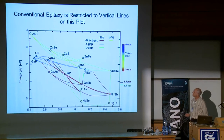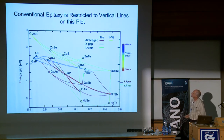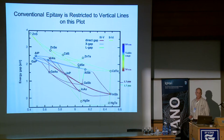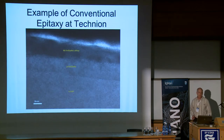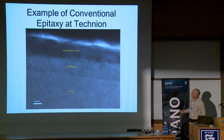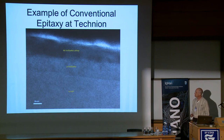Every crystal grower knows this plot. It tells us that you can only grow along vertical lines on this plot. If we attempt to go a little bit to the side, immediately we get strain and dislocations. There's the indium phosphide material system right here, the gallium arsenide material system. This is an example of conventional epitaxy we're doing here. You can see we have to grow indium gallium arsenide atoms with the same lattice constant as the indium phosphide substrate material. Only then we get nice epitaxy.